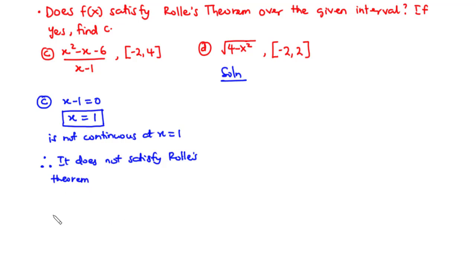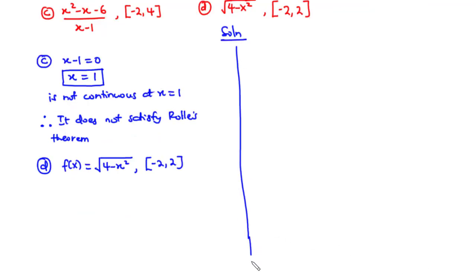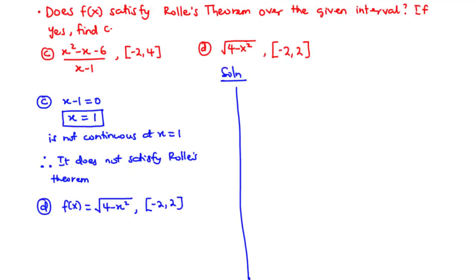So, as simple as that. Now let's move on to D. For D, we have the function f of X equals the square root of 4 minus X squared over the closed interval negative 2, 2. First, let's check if this function is continuous over the closed interval negative 2, 2.